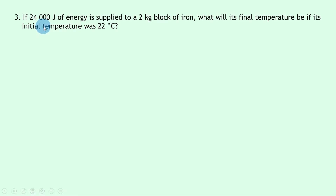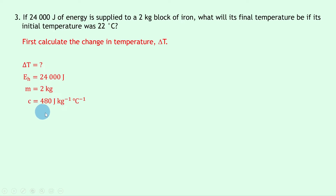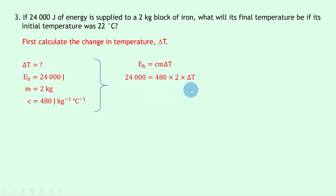Question three says that if 24,000 joules of energy is supplied to a 2 kilogram block of iron, what will its final temperature be if its initial temperature was 22°C? First we calculate delta T. We have E_H = 24,000 J, m = 2 kg, and c for iron is 480 J/kg/°C from the data sheet. Using E_H = cm·delta T gives 24,000 = 480 × 2 × delta T, so 24,000 ÷ 960 gives delta T = 25°C.